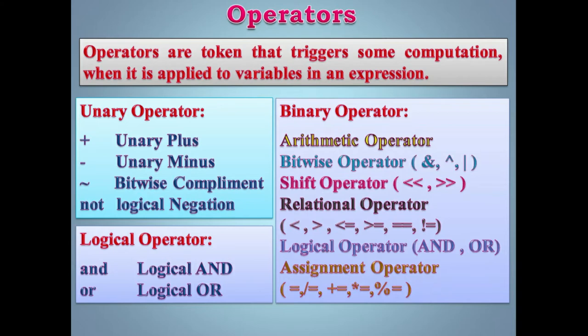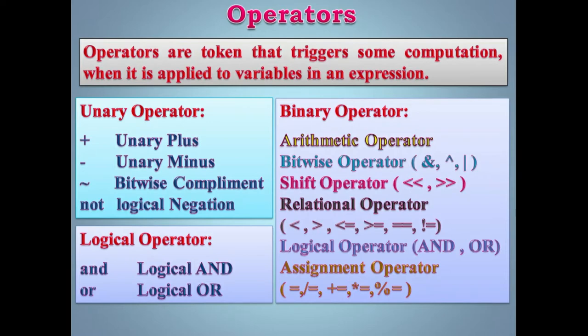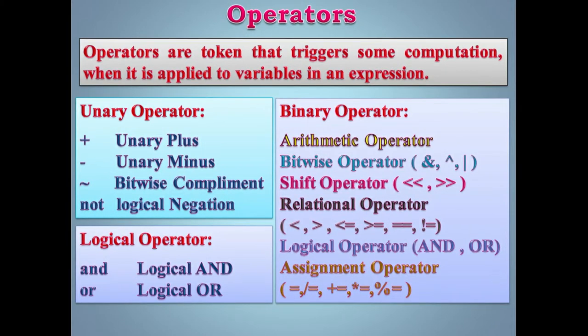Some of them are: Unary operator — unary operators are those operators that require one operand to operate upon. Jaise a + b mein do operands hain aur ek operator. Unary mein bas ek hi operand ki requirement rehti hai. Unary plus, unary minus, not (logical negation). Logical operator — and, or — in logical operators ka real life aur real projects mein bahut use hota hai.